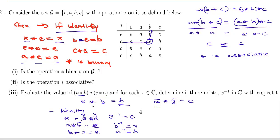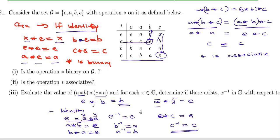What about c? Moving to c in the table: c star c — we are meeting at e. So c star c = e. Therefore, the inverse of c is c itself. So to summarize: the inverse of e is e, the inverse of a is b, the inverse of b is a, and the inverse of c is c. This completely answers the question.